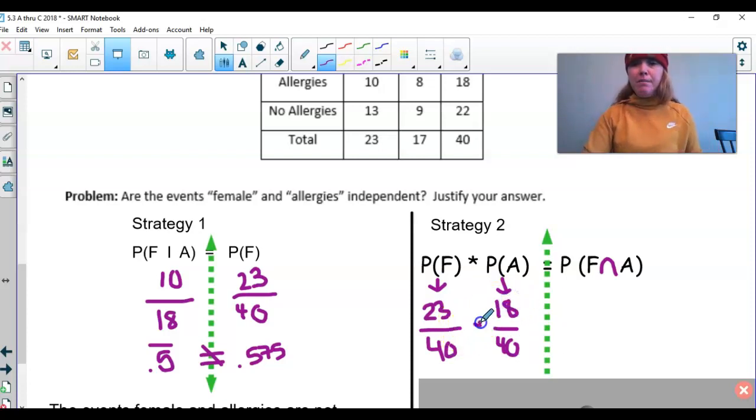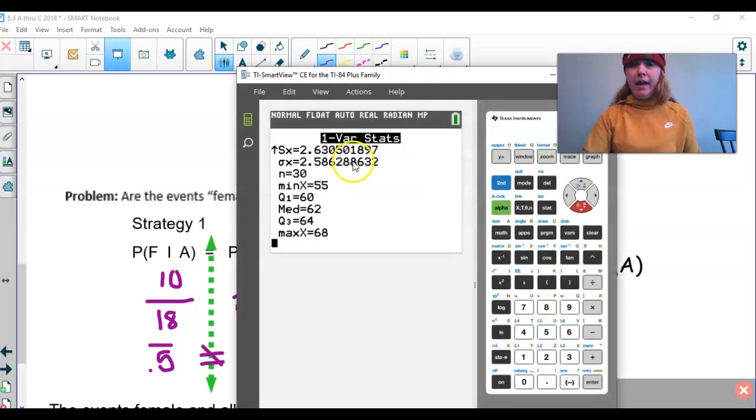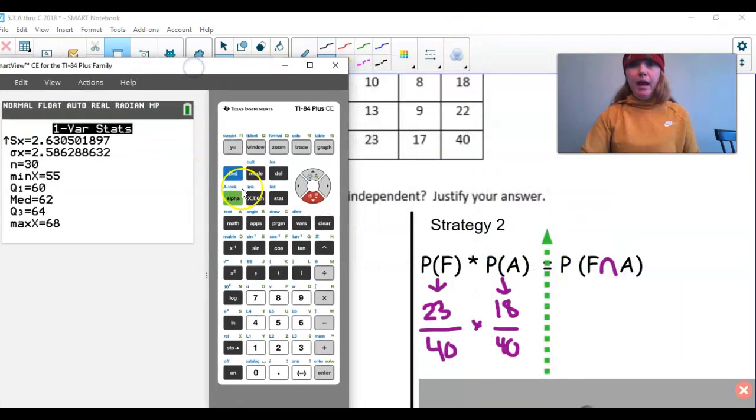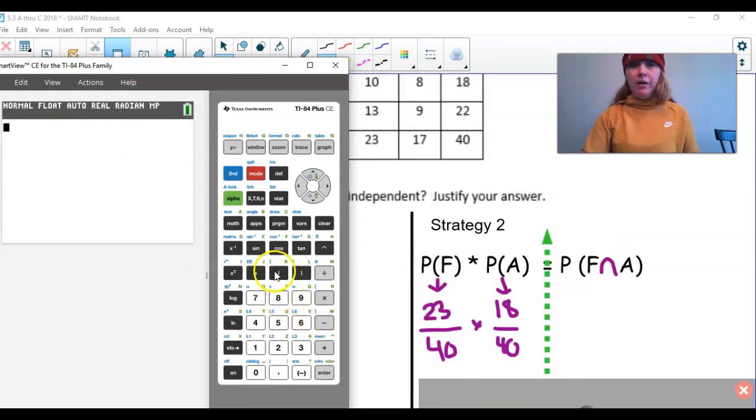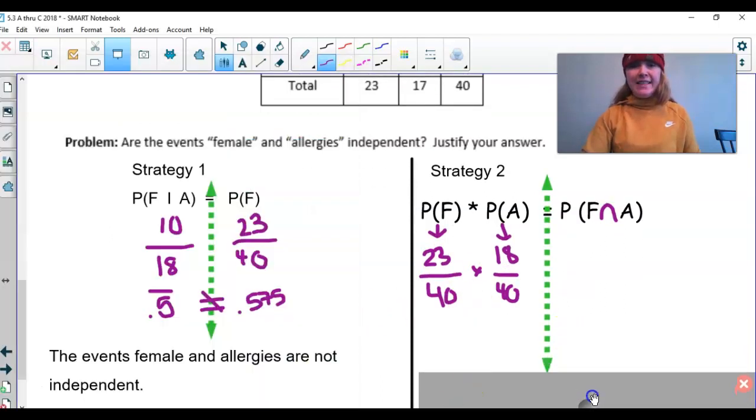Now, what I'm going to do is I need to multiply these together. So I'll take my calculator right here. I'm going to second quit to clear out. I'm going to take 23 divided by 40 times 18 divided by 40. And that is equal to 0.25875.